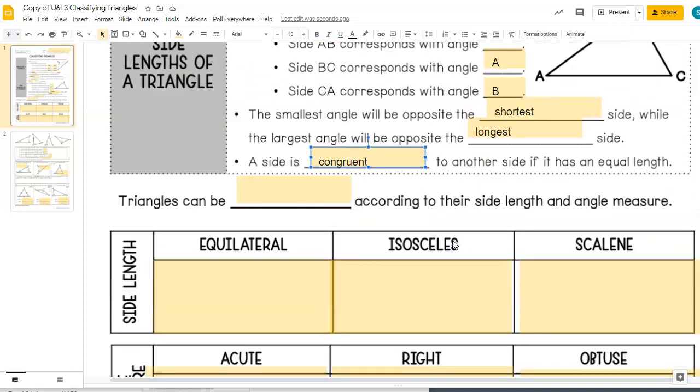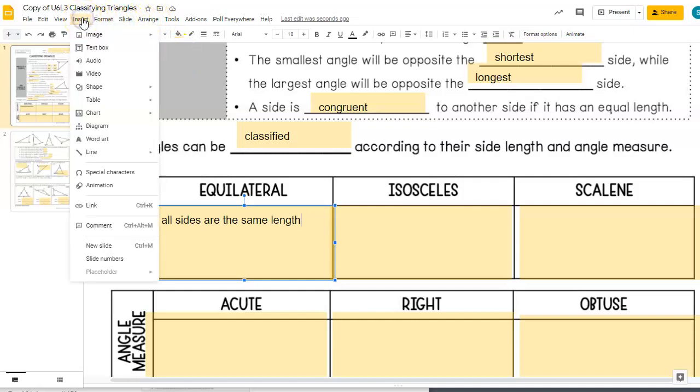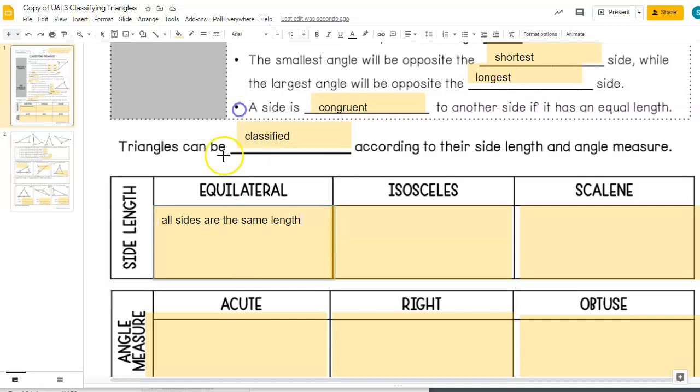We have several different triangles, and we're going to talk about how we classify them. Triangles can be classified according to their side length or their angle measure. So an equilateral triangle, all sides are the same length. I'm going to insert a shape, and I think we even have an equilateral triangle in here. We're going to grab our little line tool here. And one way that we show that things are congruent is we draw a little line through the sides.